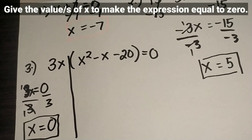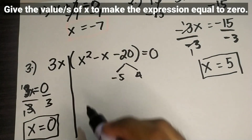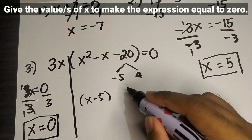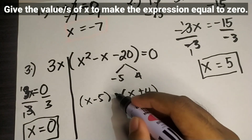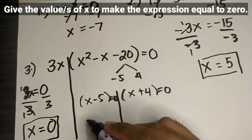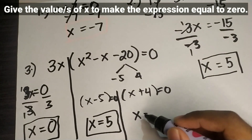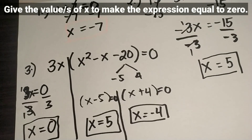Next, for x squared minus x minus 20, equate it to 0 and factor it. The last term is negative 20, and we need factors of negative 20 that add up to negative 1. Those factors are negative 5 and 4. So the factored form is (x minus 5)(x plus 4). Equating each to 0: x minus 5 equals 0 gives x equals positive 5, and x plus 4 equals 0 gives x equals negative 4. So the values of x that make the expression equal to 0 are 0, 5, and negative 4.